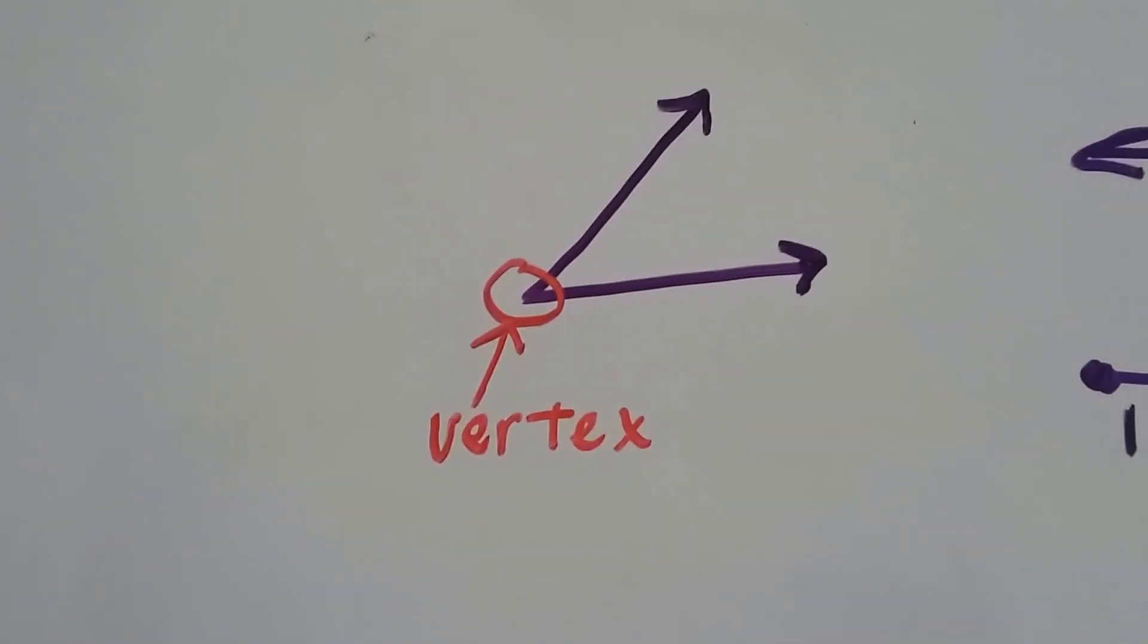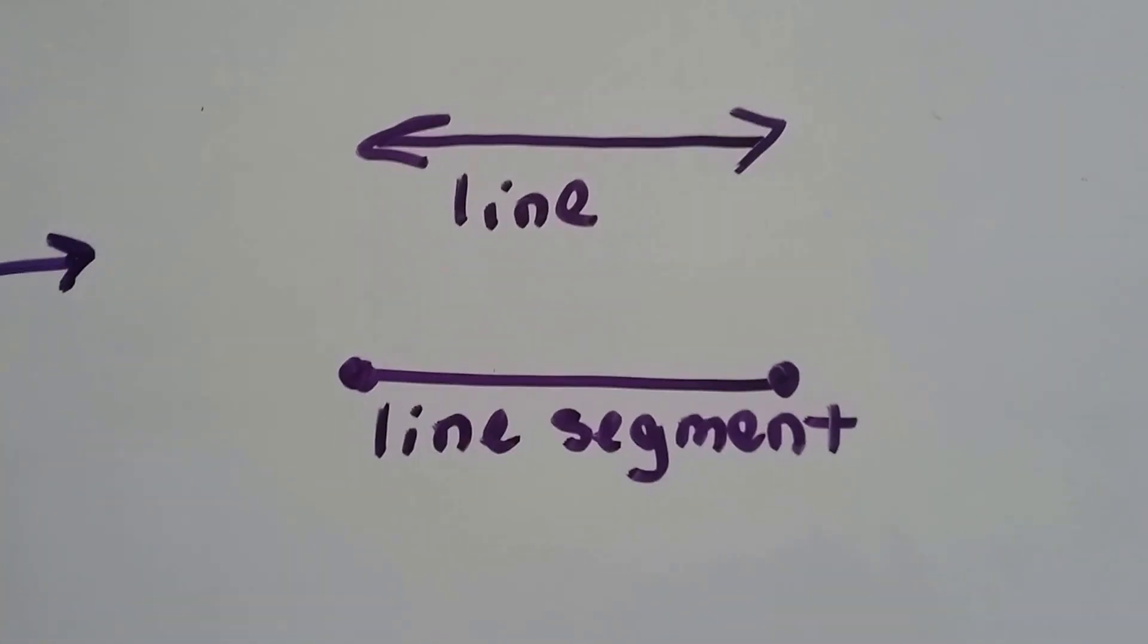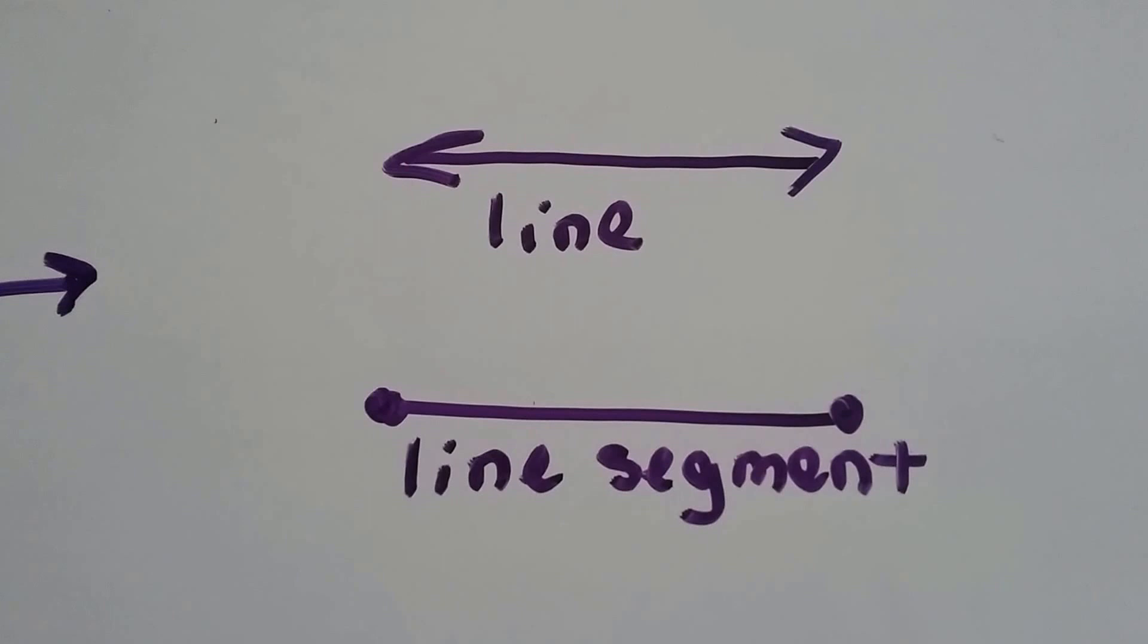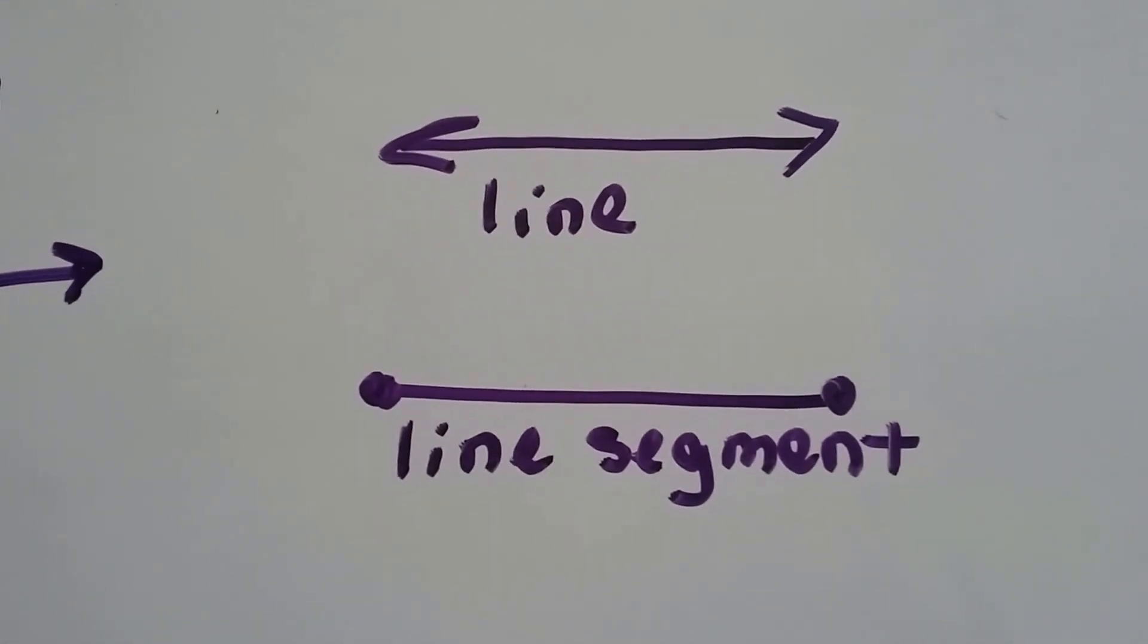The very corner of an angle is called its vertex. And if you see a line that has an arrow point on each side, then it's a line. And if it's got dots, it's a line segment.